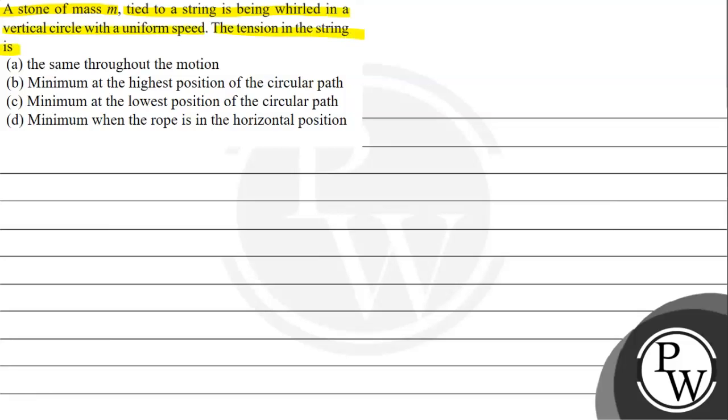The tension in the string is: Option A, the same throughout the motion. Option B, minimum at the highest position of the circular path. Option C, minimum at the lowest position of the circular path. Option D, minimum when the rope is in the horizontal position.